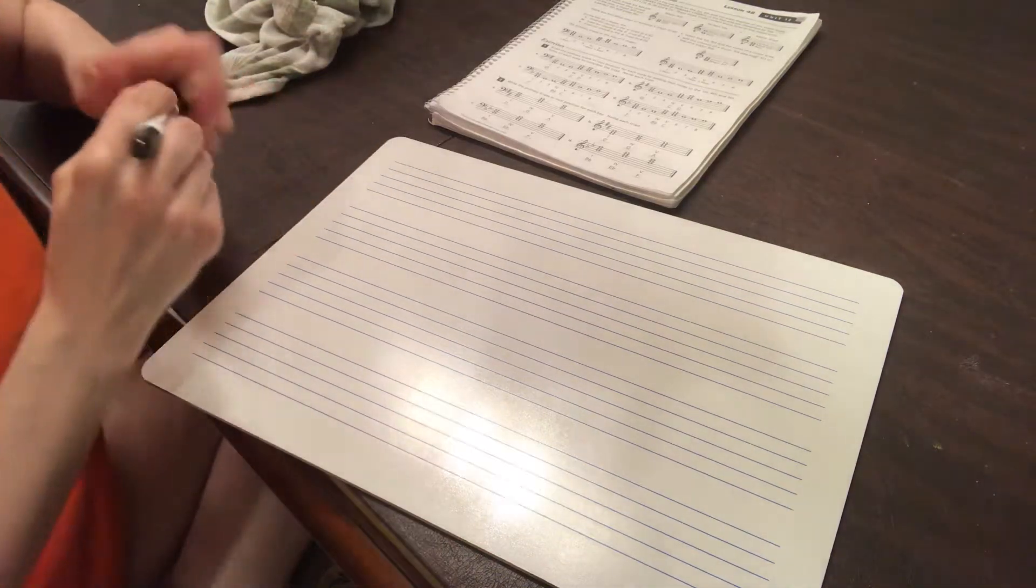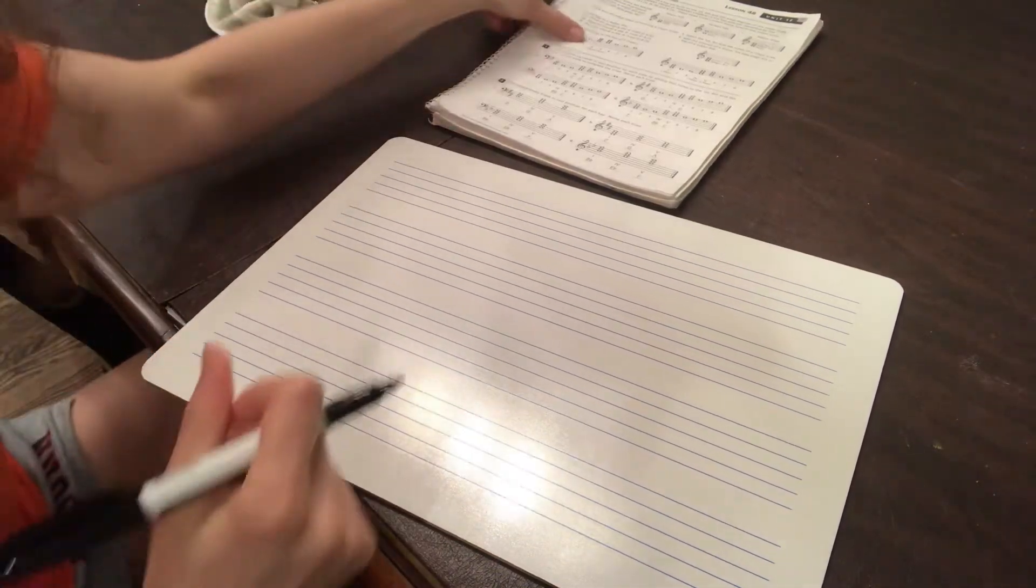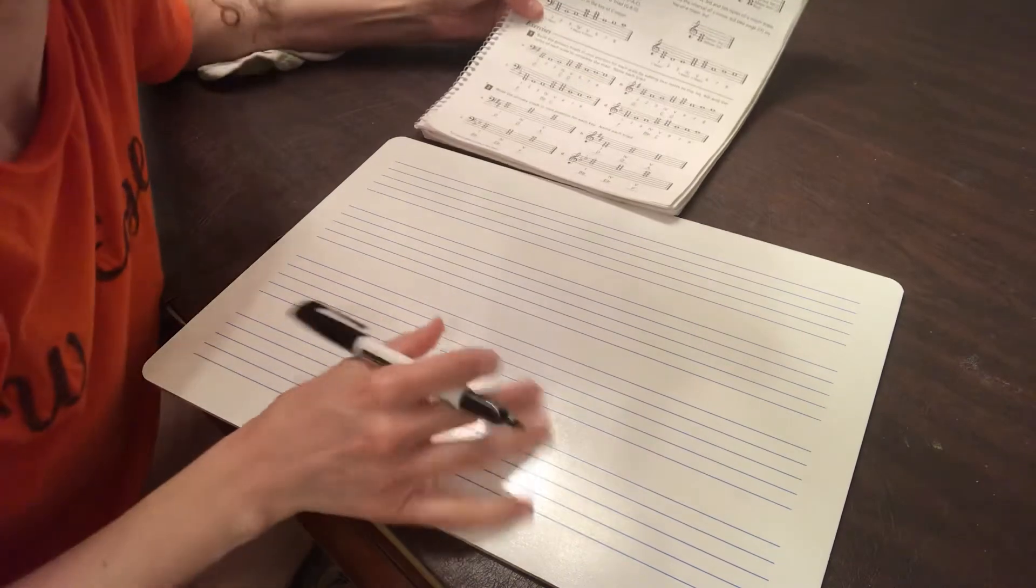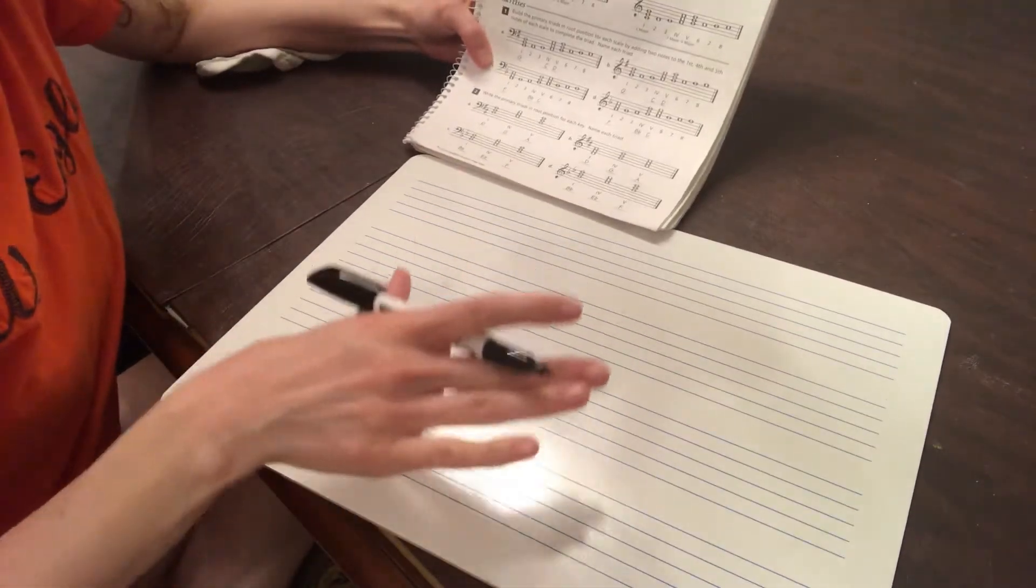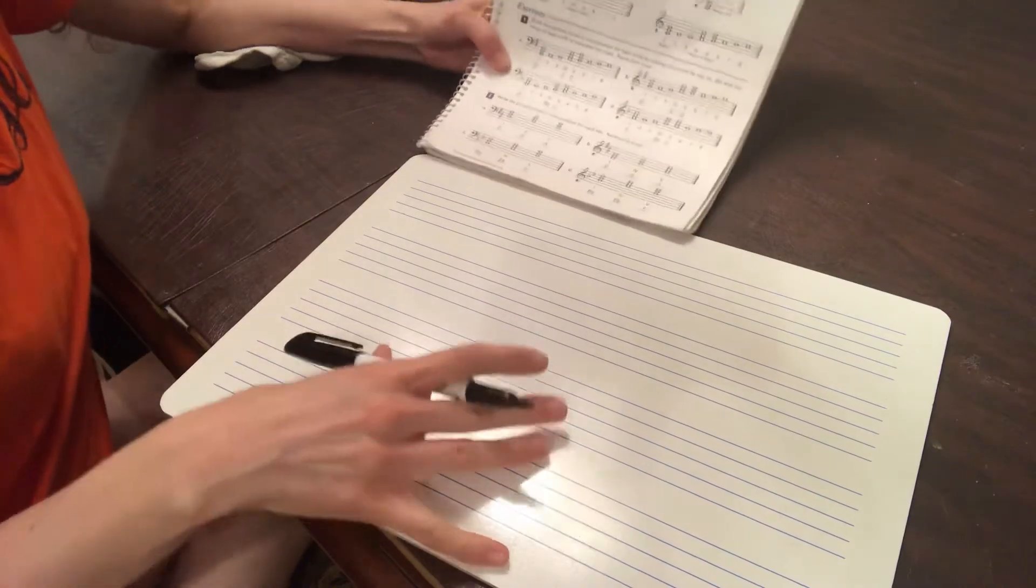Okay, this is for lesson 48, and these are primary and major triads. So now we're going to try to figure out how you create a major triad.